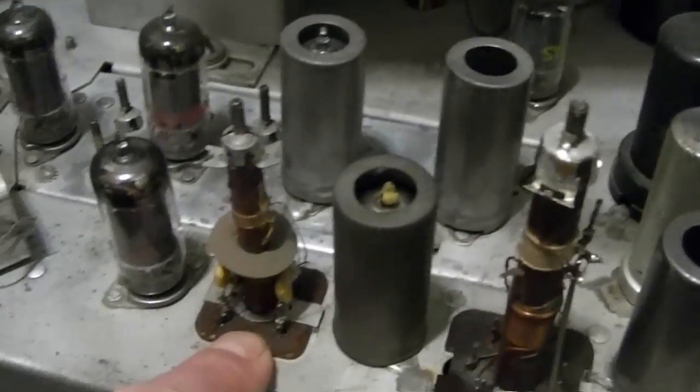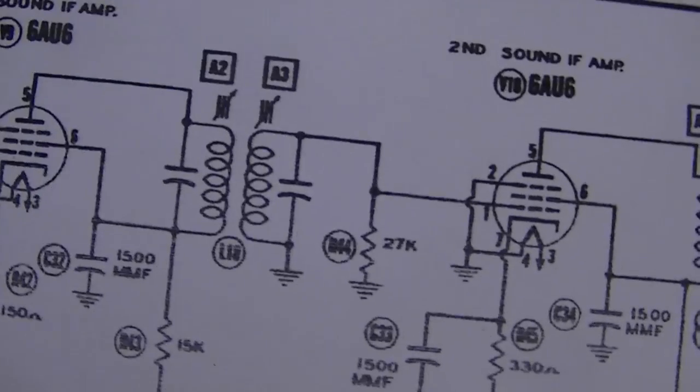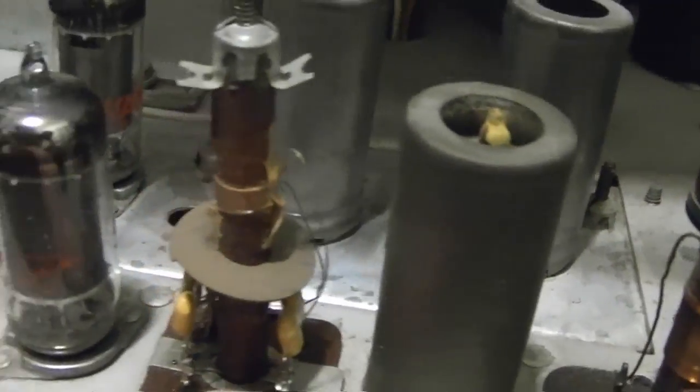What's curious though is that there are two caps here, both 30s. As they show on here, but some of the schematics, like I think the one on the Riders, they only show a single 30 picofarad. But this one had dual 30s.